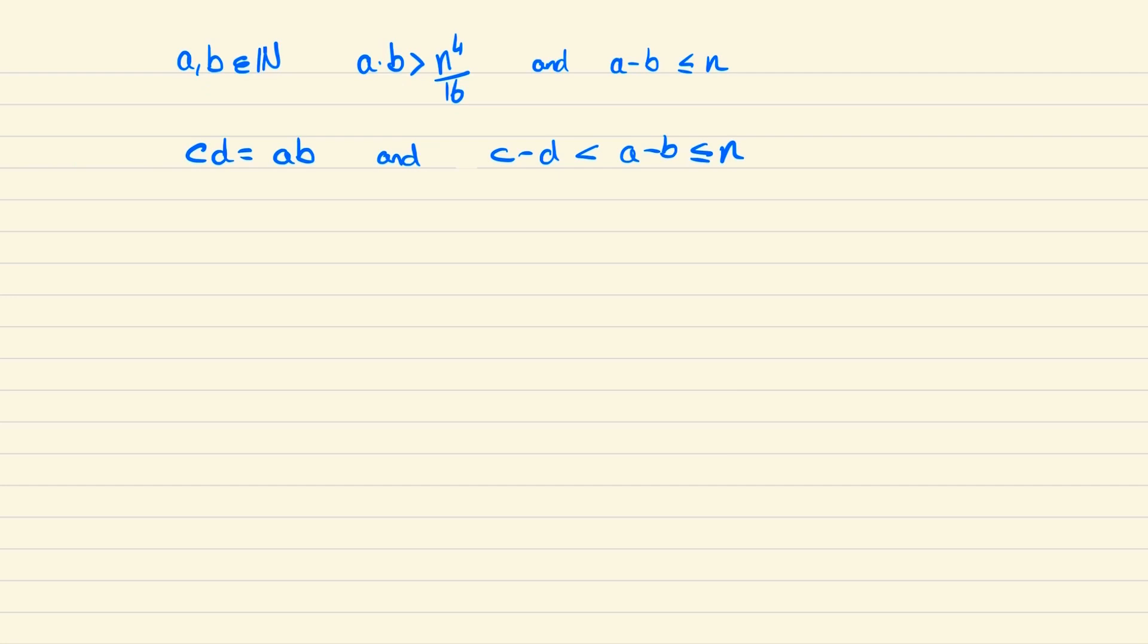We'll also note that c minus d will be greater than or equal to zero. Now to prove this doesn't occur we can start by writing p as a plus b, q as a minus b, u as c plus d and v as c minus d.